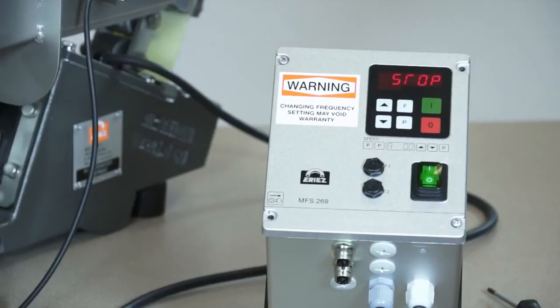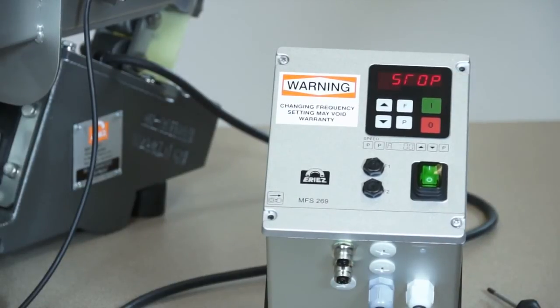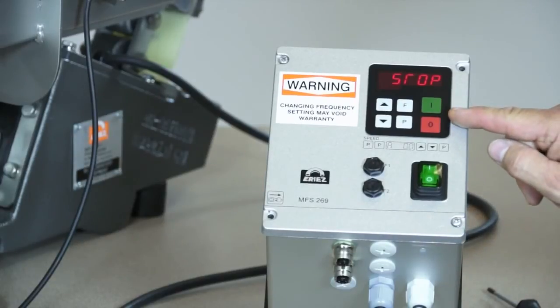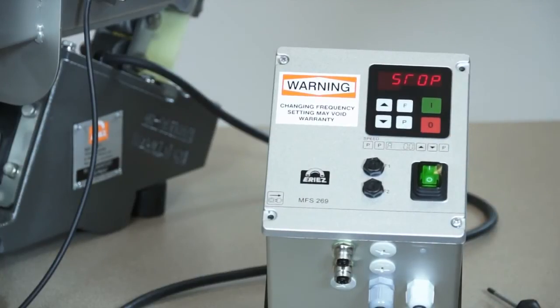Above is a five digit LED display and keypad used for operating and setting up the unit. The I and O buttons are used to turn the feeder on and off. The P button is parameter select. It is used to select a parameter to view, accept a change, or skip to the next parameter.